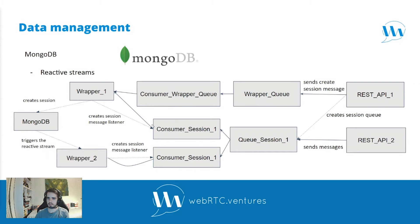Wrapper one would create a session message listener for future requests on the session queue, and also insert a new session in the database. This session message listener handles all the requests like joins, offers, and ICE candidates sent from the clients. Besides storing session data like media pipelines, new users, and connections, it also creates the WebRTC endpoints, connects the endpoints, gathers ICE candidates, sends answers and ICE candidates. This way, only a single instance of the wrapper processes requests to that queue.